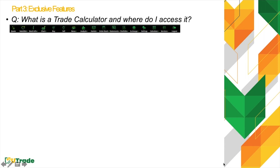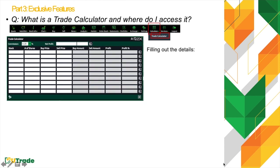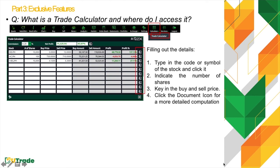The Trade Calculator is an exclusive feature in your UTrade account that shows the possible gain or loss should you sell at a specific price. To access it, go to the Calculator icon and select Trade Calculator. Fill out the details: type the stock code or symbol, indicate the number of shares, then key in the buy and sell price. The rest of the columns will be automatically filled out. You can also identify the break-even selling price and the summary of charges and fees by clicking the document icon.